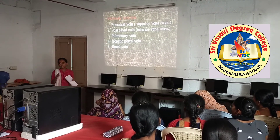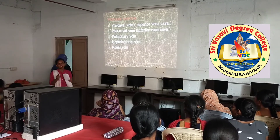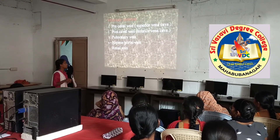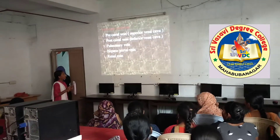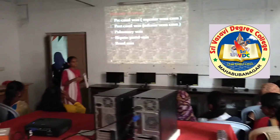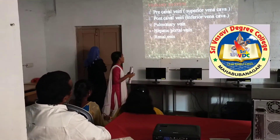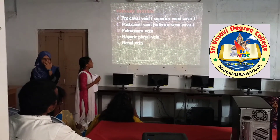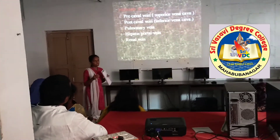Deoxygenated blood is sent to the vena cava. The posterior cardinal veins collect blood from throughout the body and send it to the vena cava. The pulmonary veins carry only deoxygenated blood and then send it to be purified. The hepatic portal veins collect deoxygenated blood from the liver, and the renal veins collect deoxygenated blood from the kidneys.